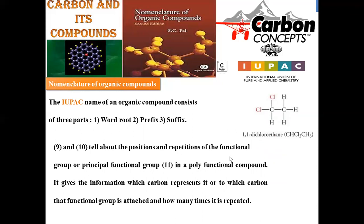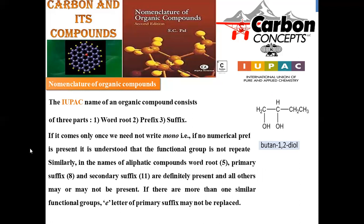Regulations nine and ten tell about the position and repetition of functional groups. For example, a two carbon chain with two chloro groups on the same carbon: chloro is present at position 1 twice. Two times is indicated as di (numerical prefix). Position is 1,1 (number prefix). Root word is ethane. So the IUPAC name is 1,1-dichloroethane. If a group is present only once, there is no need to write 'mono' - just write chloroethane (implying one chloro group).